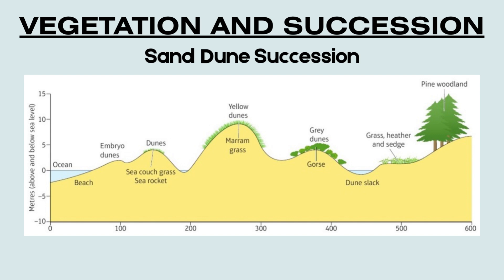Further inland, the dunes become more stable and less salty, forming grey dunes, named for their darker soil and the presence of plants like gorse. Organic matter from plants begins to build up in the soil, improving fertility. Between dune ridges, low-lying areas called dune slacks form, where water collects and the soil is more moist. Here, you'll find grass, heather, and sedge growing. Eventually, if conditions allow, pine woodland or other types of climax vegetation develop, marking the final stage of succession. These areas are sheltered from wind and salt spray and support more complex ecosystems.